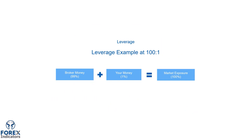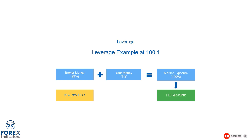This lesson will follow on from the previous section's example about leverage at 100 to 1. In that lesson, I explained that if you were to buy one lot of the Great British Pound, you would need 146,327 US dollars. To gain the same market exposure, you could use leverage at 100 to 1 to borrow 99% of the money from the broker and provide 1% of the money in your account, or $1,463, to open this position.